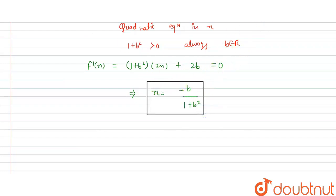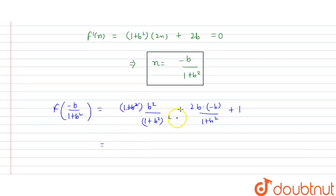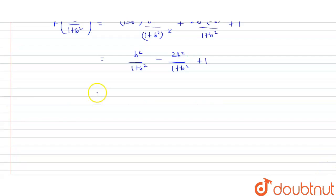Now we find f(-b/(1+b²)) by substituting this x value into f(x). f(x) = (1+b²)·x² + 2bx + 1. Substituting: (1+b²)·b²/(1+b²)² + 2b·(-b/(1+b²)) + 1, which simplifies to b²/(1+b²) - 2b²/(1+b²) + 1 = 1/(1+b²). So the minimum value of f(x) is 1/(1+b²).